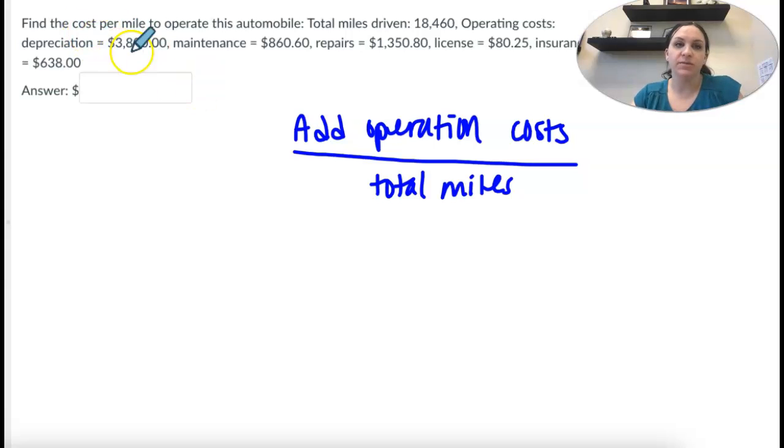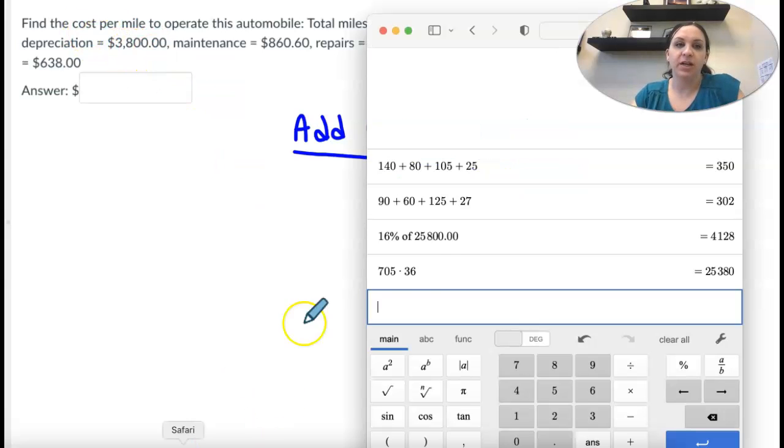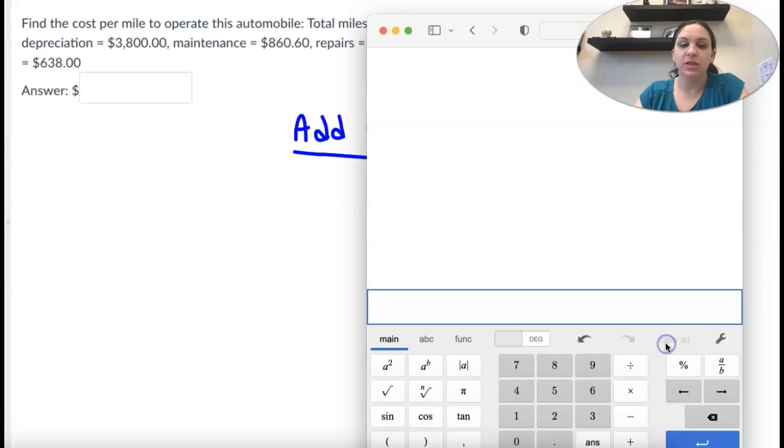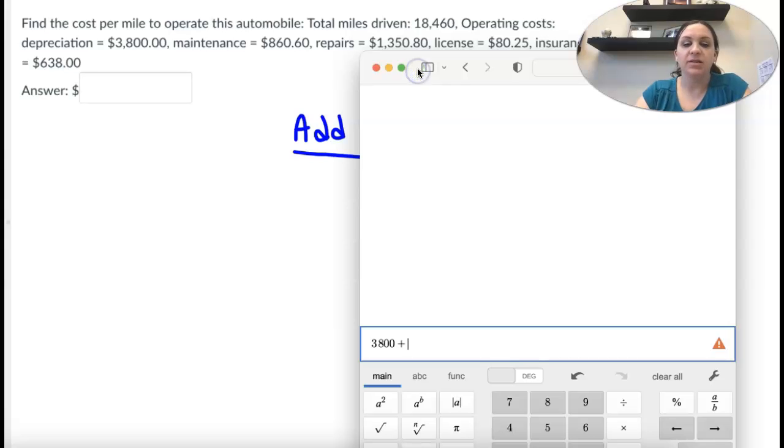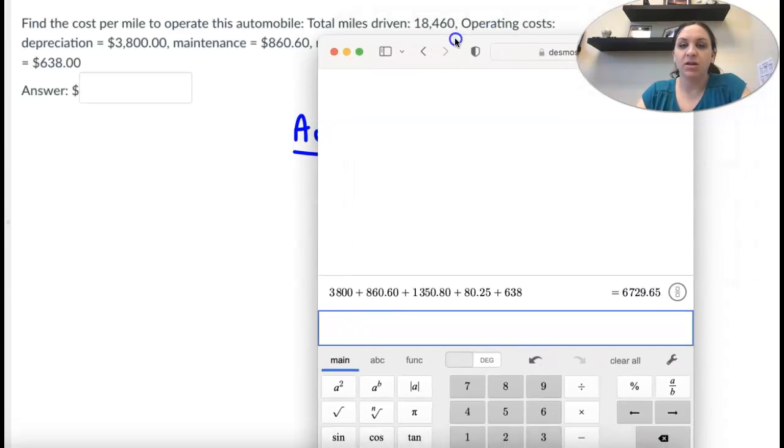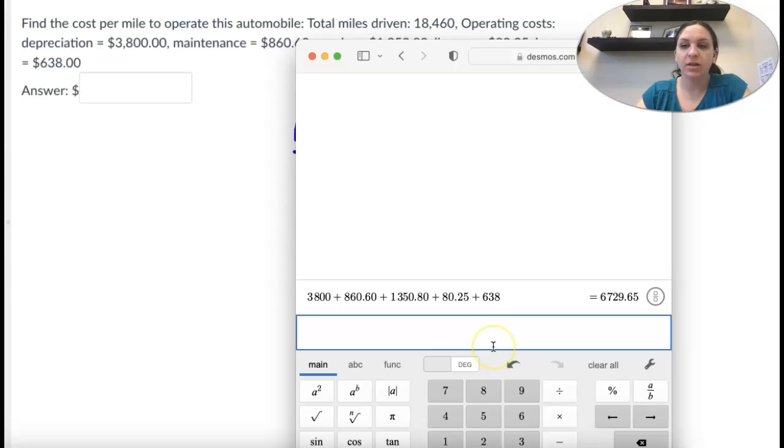Well, the depreciation is $3,800, maintenance is $860.60, repairs is $1,350.80, license is $80.25, insurance is $638.00. Okay, so that is all of the costs.